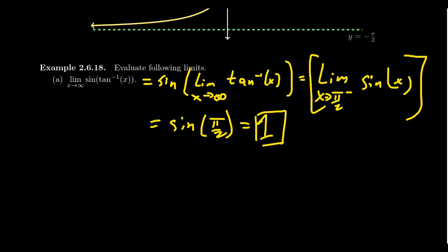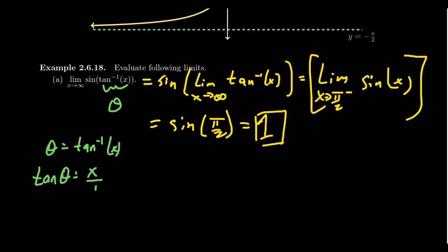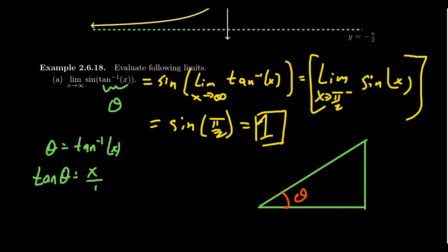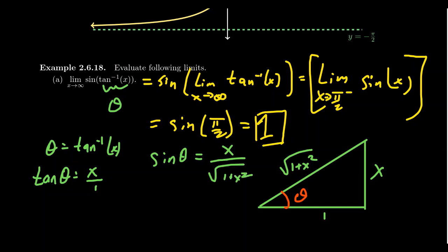Now I want to approach this question from a slightly different perspective. Whenever you deal with inverse trigonometric functions, you can associate them with an angle. So let θ = arctan(x), which means tan(θ) = x, or x/1. We can connect this to a right triangle where the angle in question is θ, the opposite side is x, the adjacent side is 1, and by the Pythagorean theorem the hypotenuse is √(1 + x²). Then sine of θ equals opposite over hypotenuse, which is x / √(1 + x²).